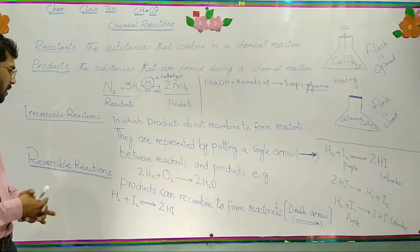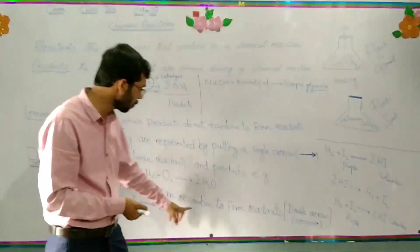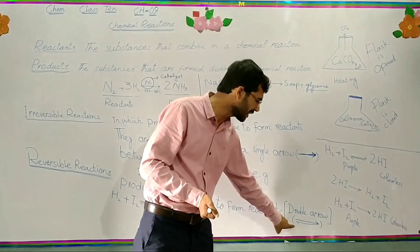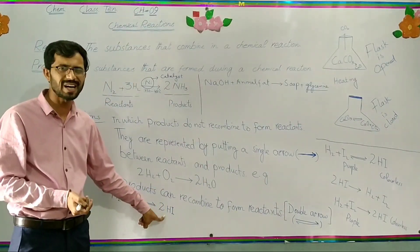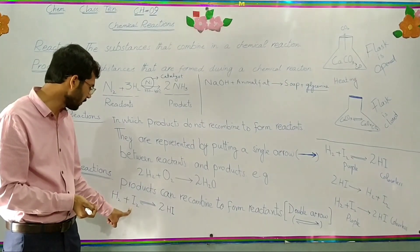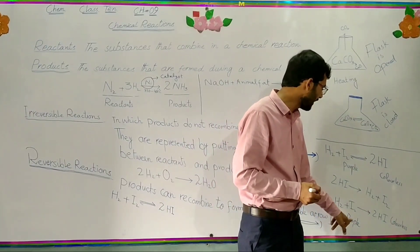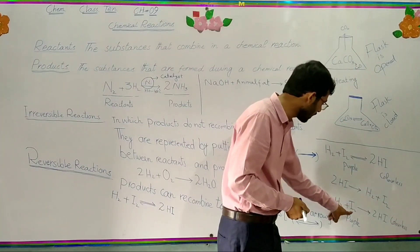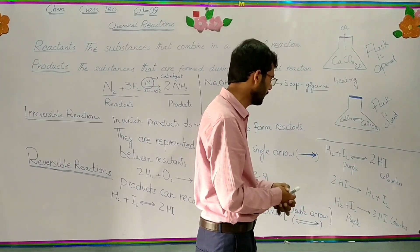What are reversible reactions? Reversible reactions are those reactions in which products can recombine to form reactants again, and they are represented by putting a double sign of arrow between reactants and products. One example of reversible reactions is the formation of hydrogen iodide — when one mole of hydrogen and one mole of iodine are heated, they form hydrogen iodide. The colour of hydrogen iodide is colourless.